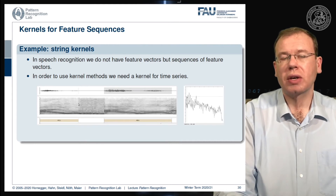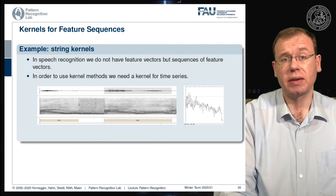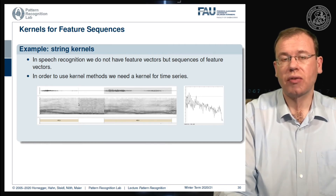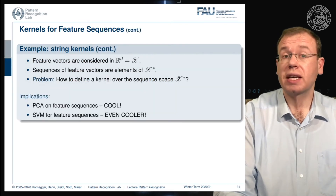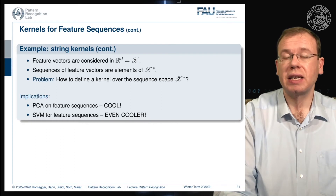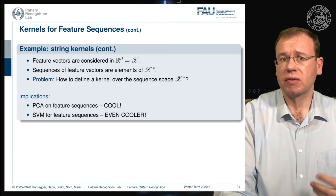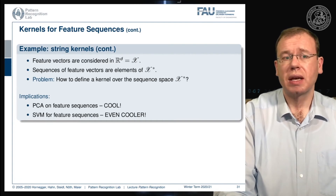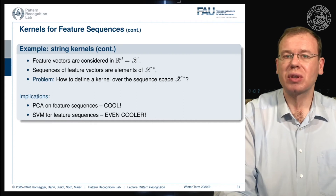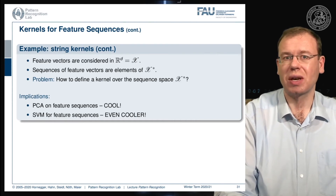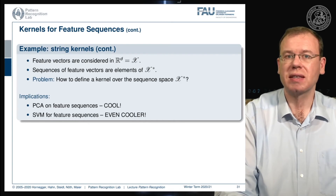We can also apply kernels to strings. For example, in speech we very often have sequences of different length. If you have time series or speech signals, you don't have the same dimensionality for different feature observations. We can still use kernels and can compare sequences of symbols like strings, waveforms, and all kinds of time series data in a kernel space. We can then compute PCA on feature sequences and use SVMs on feature sequences. Everything we learned for fixed-dimensional feature spaces can also be applied to sequences of varying length.